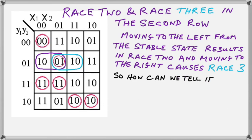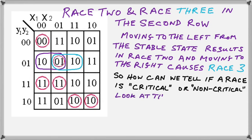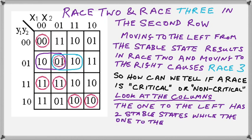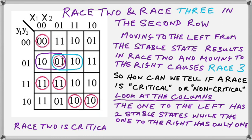So how can we tell now if these races are critical or non-critical? Looking at the columns, we will see how many stable states exist in the column. When we move to the left, we find that we have two stable states in that column in row 1 and row 3. And when we move to the right, we see that we only have one stable state at the bottom in row 4. So where there is only one stable state, we have a non-critical race. And where there are two stable states, we have a critical race.